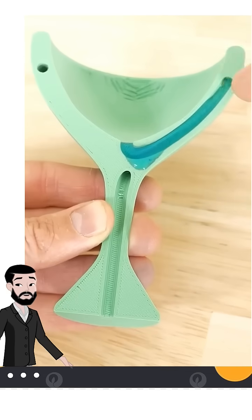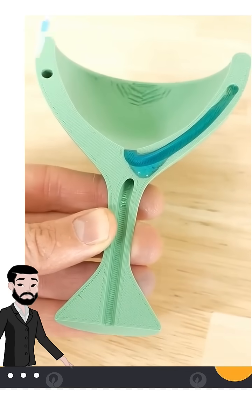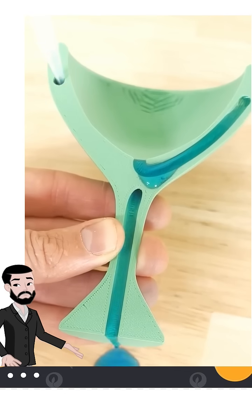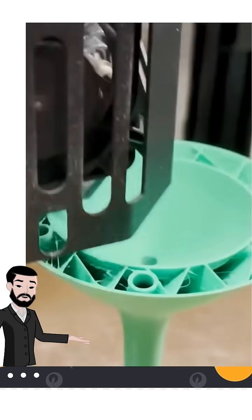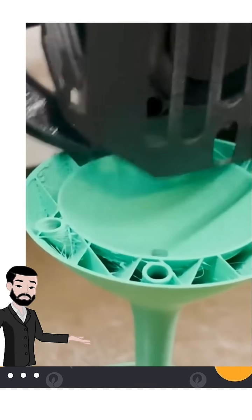As the liquid reaches a certain level, it activates the hidden siphon, draining the cup completely. This modern twist was made possible with 3D printing, allowing for intricate designs that weren't possible before.